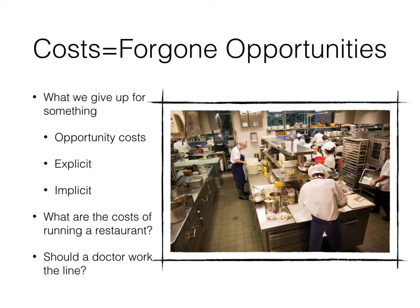Therefore, these are the opportunity costs of what we give up to have this restaurant, and those would be mostly monetized. The non-monetized implicit costs would be the owner's time and the return on capital that's being used, that could be used elsewhere, that's being used to run this business. Those would be the implicit costs.